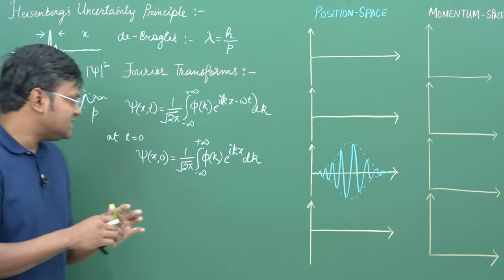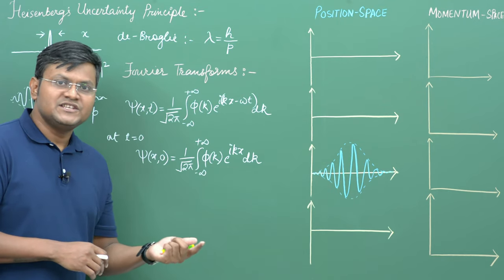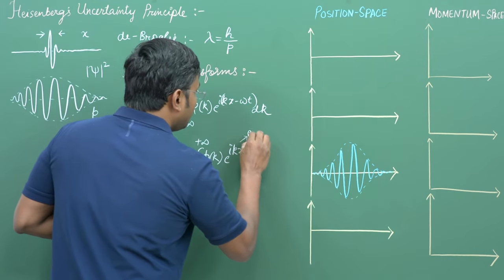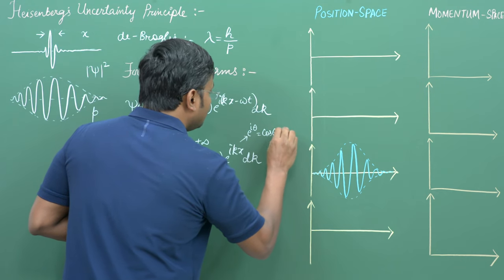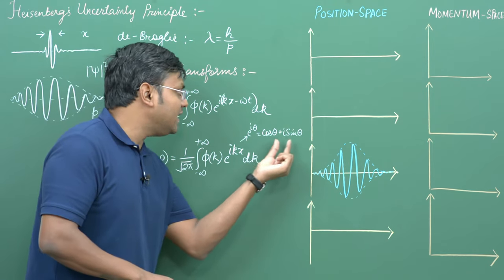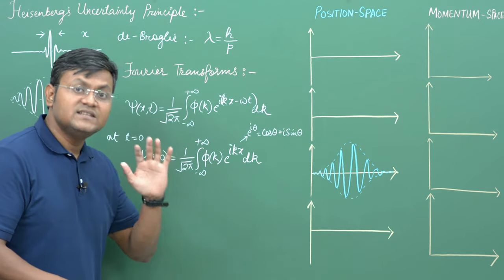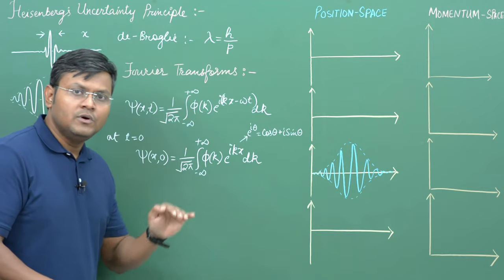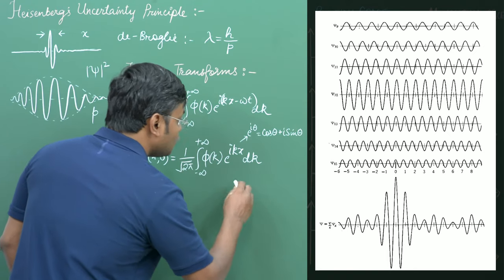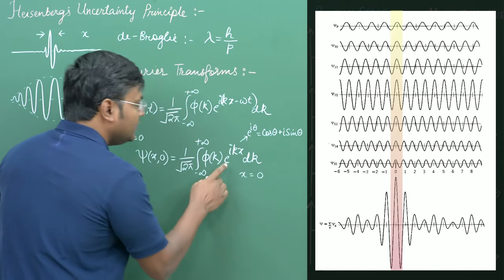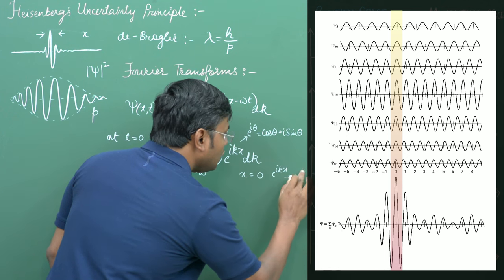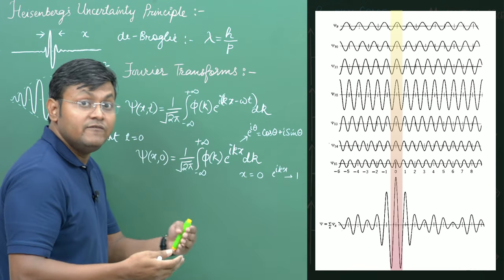This wave packet represents a plane wave solution. Plane waves are complex functions with sine and cosine components, since e^(iθ) = cos θ + i sin θ. At x = 0, e^(ikx) tends to 1 for all plane wave solutions, and they all constructively interfere to give a large peak. But as you go away from x = 0, e^(ikx) gives large numbers of random oscillations which cancel each other out, resulting in destructive interference away from the center of the wave packet.